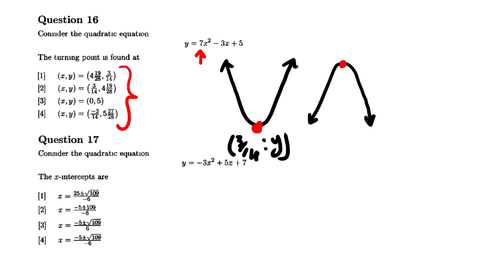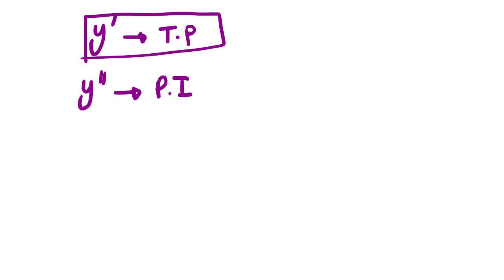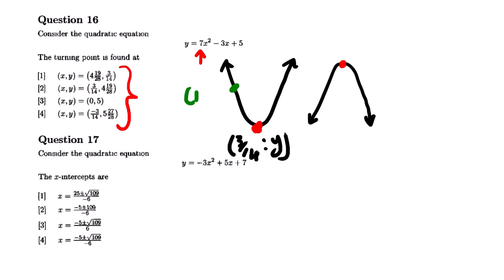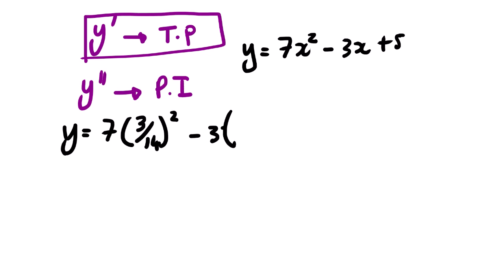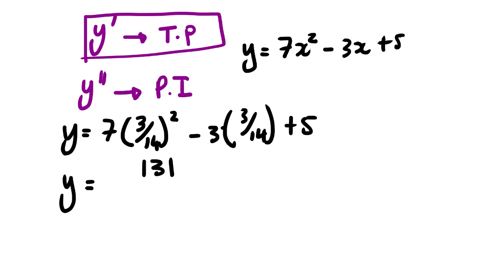Now we are looking for y — how do we find the y-coordinate of the turning point? We use our original equation. Where we see x, we substitute by the x-coordinate. If you have the x value, you substitute it into the function and it gives you the y-coordinate. So where we see x we substitute 3 over 14: y = 7(3/14)² − 3(3/14) + 5, and we find that y equals 131 over 28.